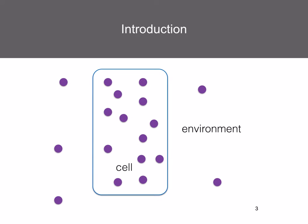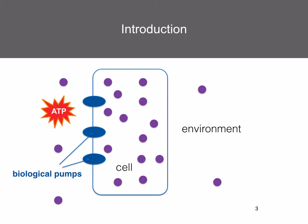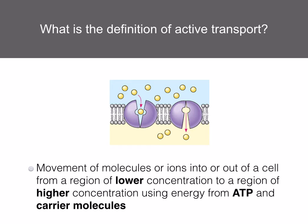Here you've got a cell. The purple dots represent ions. You can see that the concentration of the ions is much higher inside the cell compared to the environment. So how are these ions entering the cell? It's by a process called active transport — they're moving against their concentration gradient through the cell membrane. For them to do this, they need energy in the form of ATP and special biological pumps. Active transport is the movement of molecules or ions into or out of a cell from a region of lower concentration to a region of higher concentration, using energy from ATP and carrier molecules. Key words to remember: from low to high, ATP, and carrier molecules.